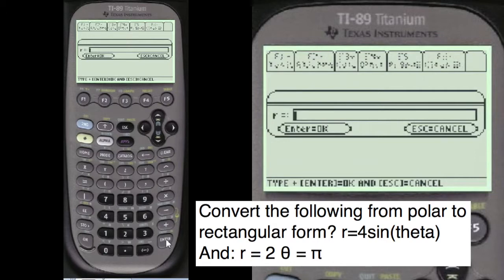And this problem that I'm showing you came off of Yahoo. Some student wanted to know the answer to this, so I wrote it down exactly the way he or she put it. And then I'm also going to do another one where radius equals 2 and theta equals pi.